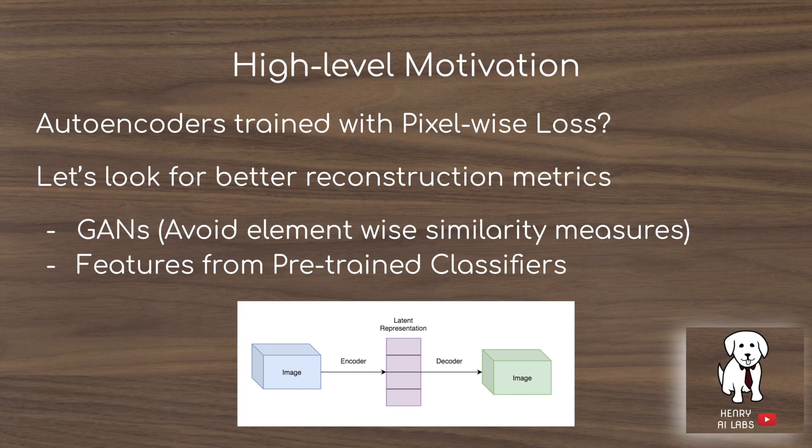GANs use the generator and discriminator framework to have a more semantic loss function that avoids the element-wise similarity measure. Another interesting loss function for reconstruction is to use features from a pre-trained classifier. For example, if you have a ResNet50 trained on ImageNet classification, you could look at the features on layer 48 and the difference between the original image and the reconstructed image to evaluate how well the decoder has reconstructed the image from the low-dimensional vector representation.